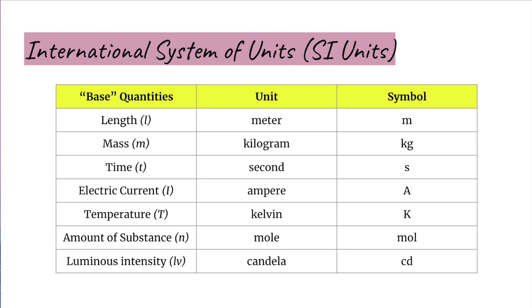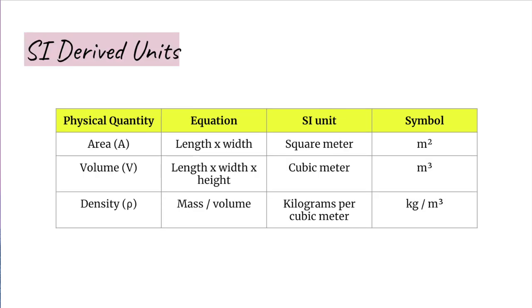Under this system, there are seven fundamental units for physical quantities from which other units are derived. These are: length, mass, time, electric current, temperature, amount of substance, and luminous intensity. The SI unit for length is meters, mass is kilograms, time is seconds, electric current is amperes, temperature is kelvins, amount of substance is moles, and luminous intensity is candelas. Derived units are units which come from these fundamental units — some examples include area, volume, and density.